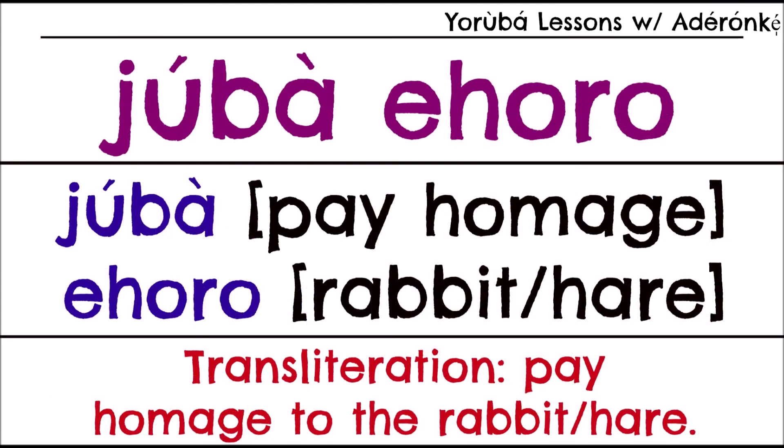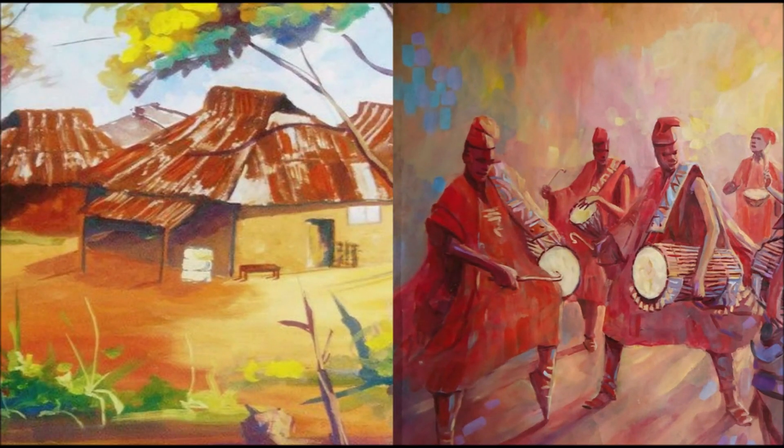So, as I said, let's go with hare for this idiom. Because the hare is quite fast, when you say 'juba eoro' — 'pay homage to the hare' — you're essentially saying that someone, whether human or another sentient being, ran away. That's the meaning of 'juba eoro': the person ran away.